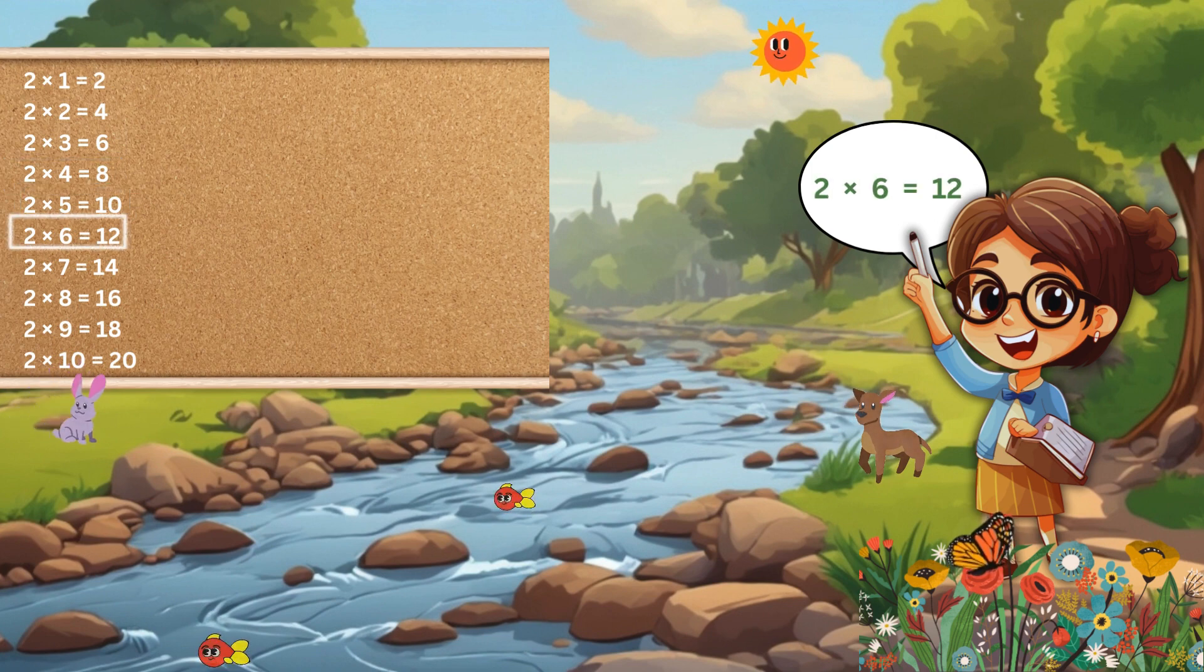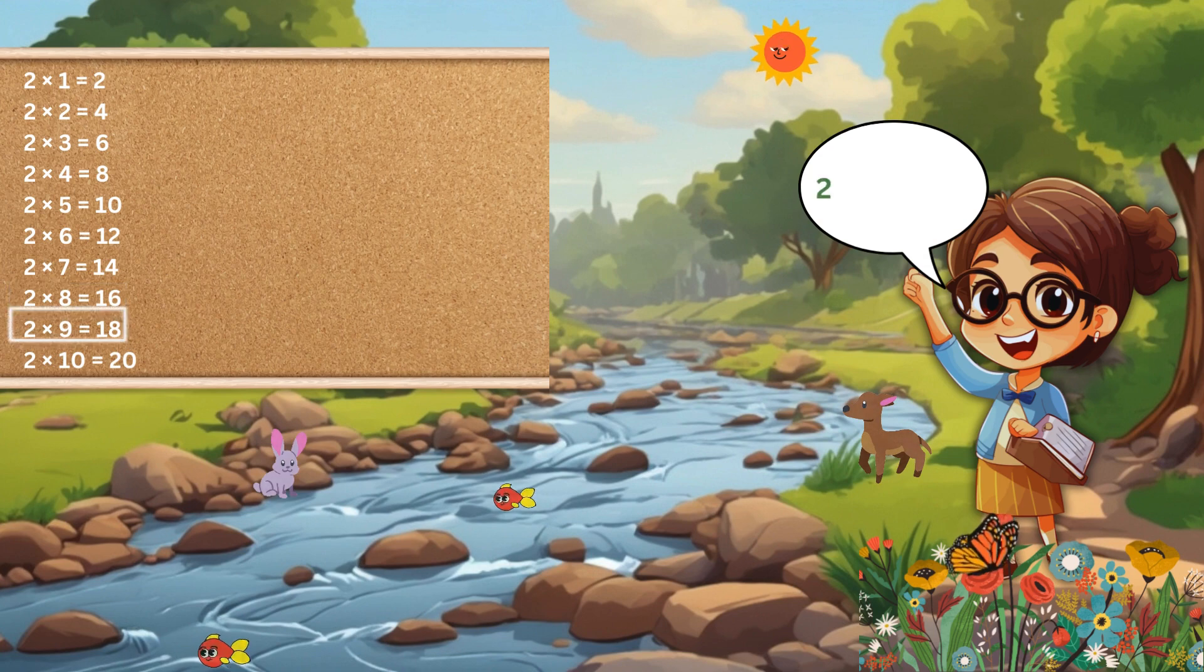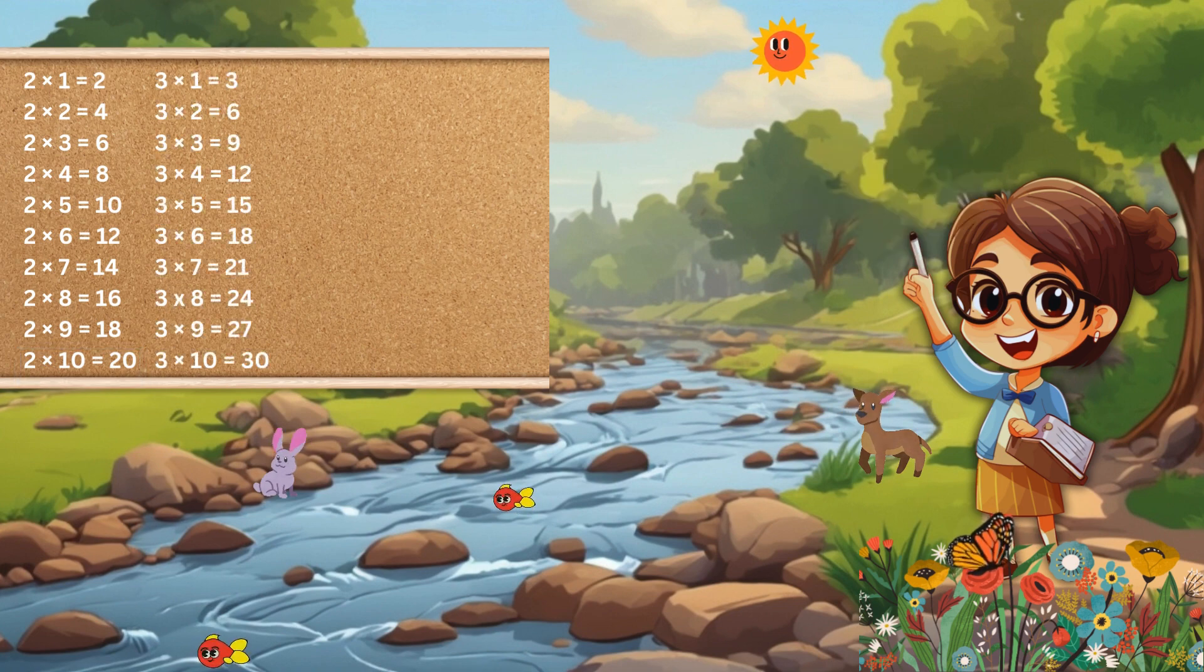2 6s are 12, 2 7s are 14, 2 8s are 16, 2 9s are 18, 2 10s are 20. Now let's learn table of 3.